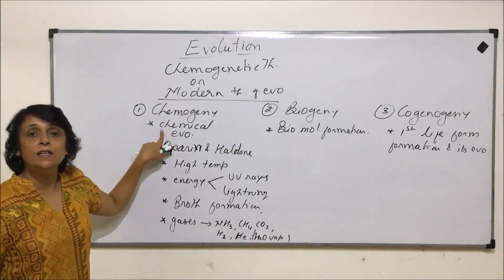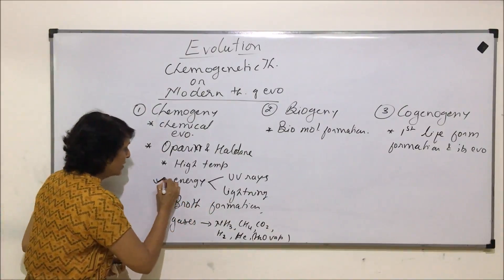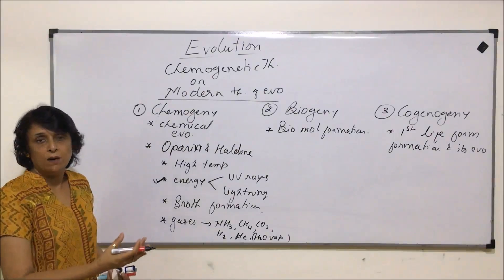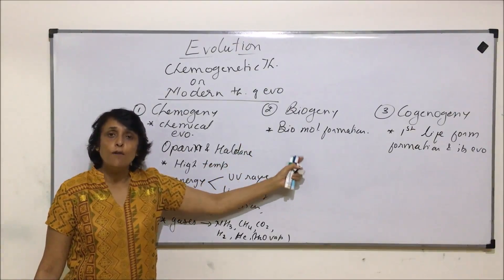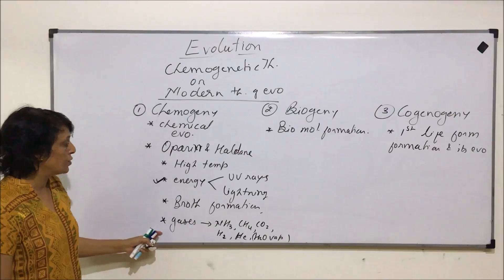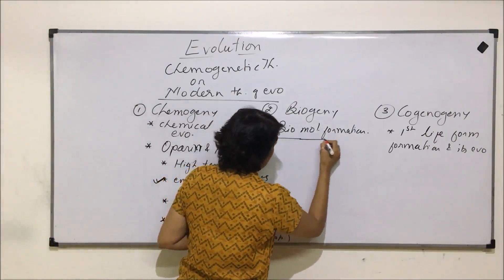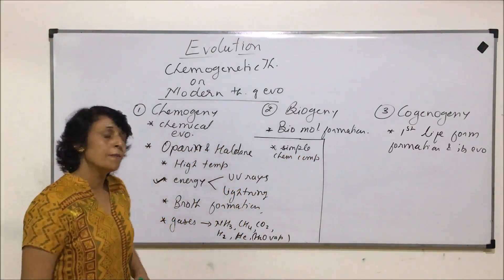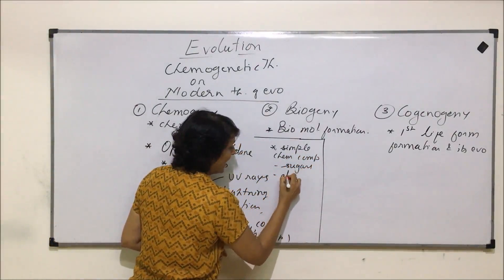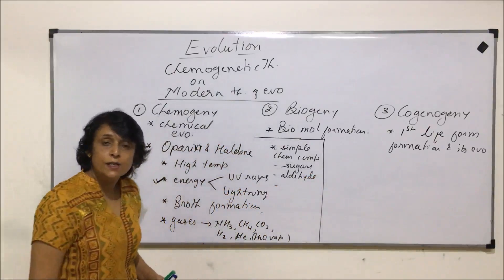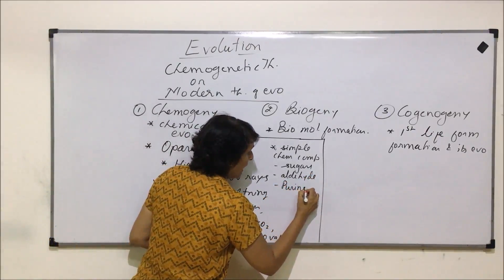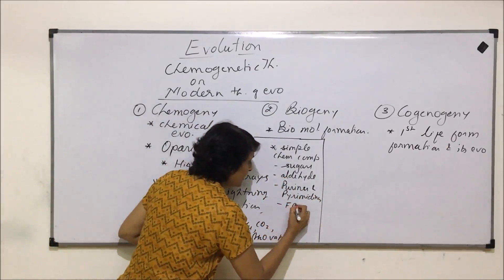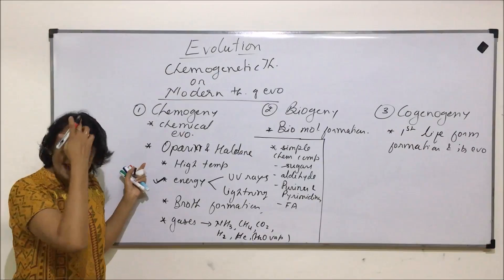At that time when life originated, these were the conditions existing. Chemical evolution says that in the presence of this energy, certain molecules or compounds must have reacted to form bigger molecules, resulting in the formation of molecules which could replicate. Some simple chemical compounds were formed — compounds like sugars, aldehydes, and nitrogen bases which we now know as purines and pyrimidines.